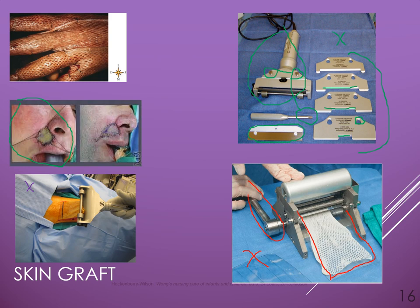Full thickness grafts can be harvested from various places — a typical common location is right in front of the ear, if they're going to do grafting rather than a rotation flap.